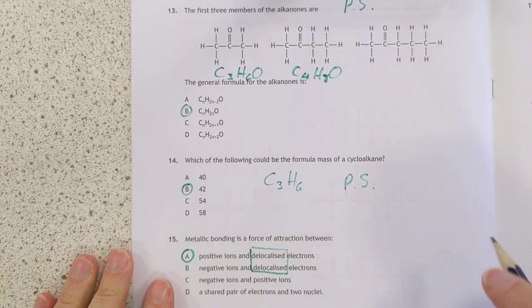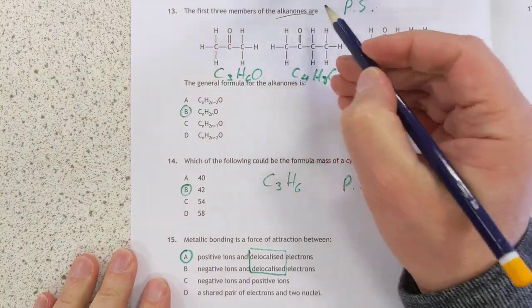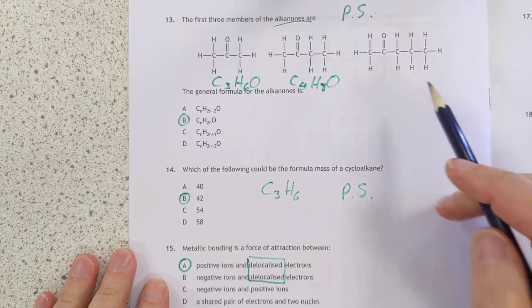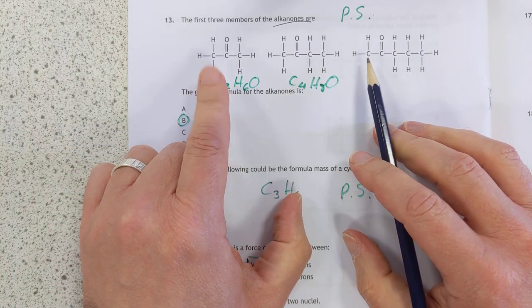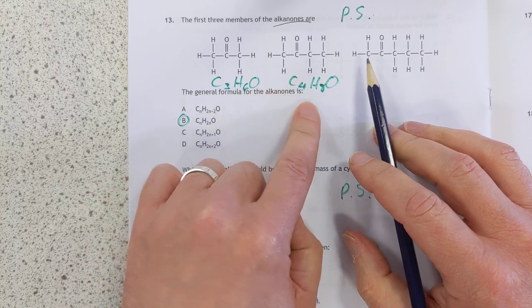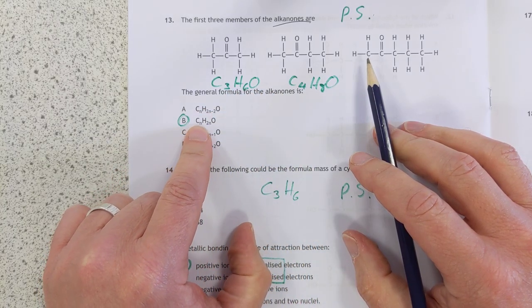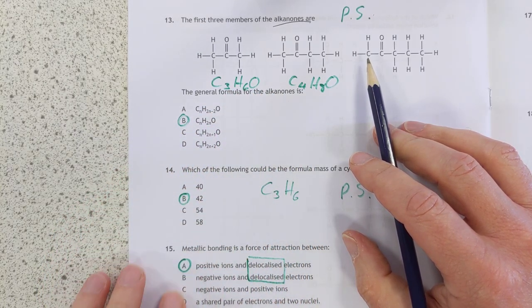Number 13. Problem solving. We've never heard of these alkanons. So what I did was, pretend I don't know what they are. I would construct the formula for a couple of them, see which one it fits, and it fits CnH2N with an O. So the answer's B.